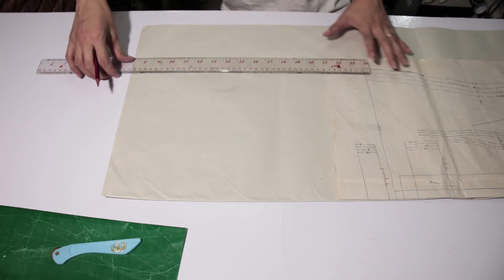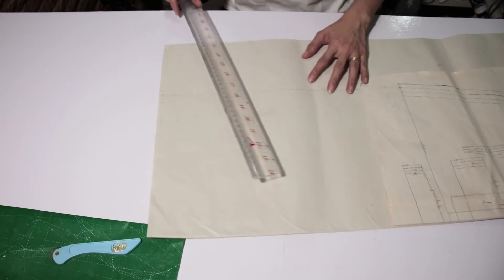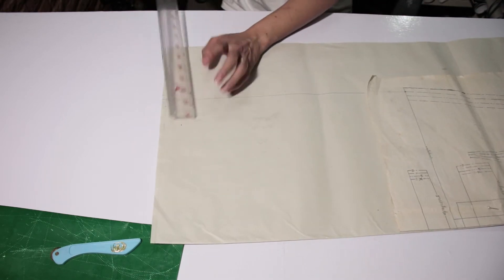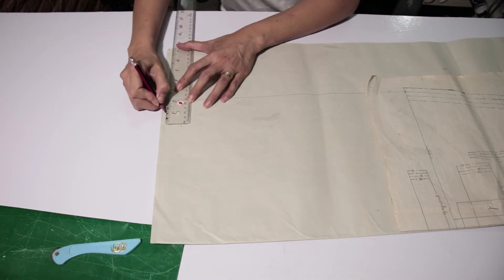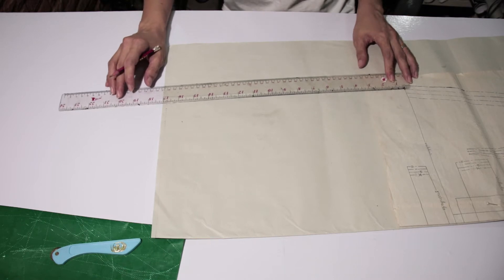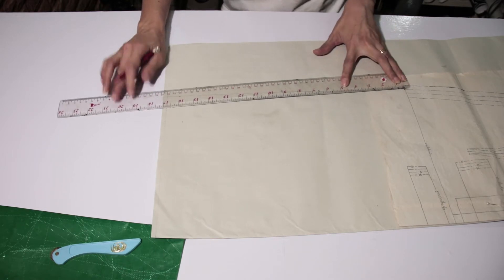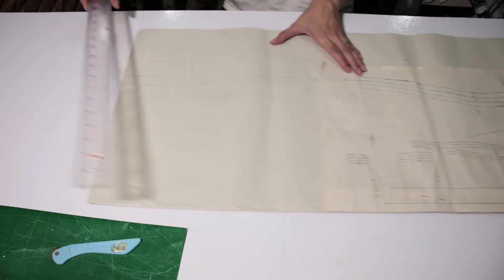And then you're going to draw a straight line from the hip point down to the bottom. Like this. But because I want the end of my dress a little bit narrower, so I'm going to measure from the side here one inch. And then draw one more straight line from the hip line to the bottom.